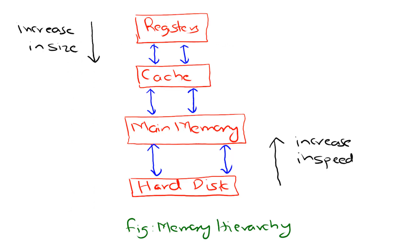Let's see the memory hierarchy in action. When you open a document, the CPU first checks if the document's data is in cache. If it's not, the CPU retrieves it from RAM. If the document is not in RAM because it was recently closed, the CPU retrieves it from the hard drive and loads it into RAM, then copies the relevant portion into cache for faster access. By organizing memory in this hierarchical way, computers achieve a balance between speed, cost, and capacity, ensuring efficient performance.